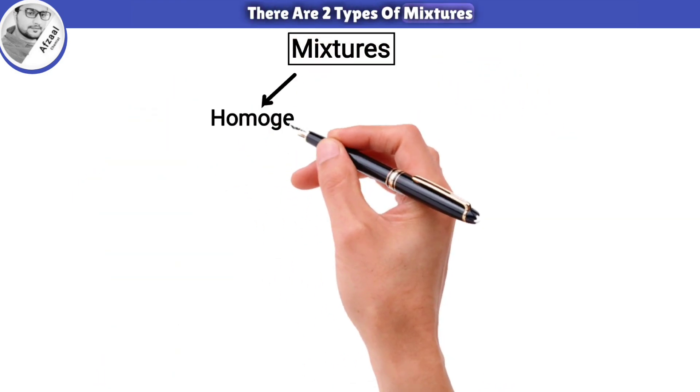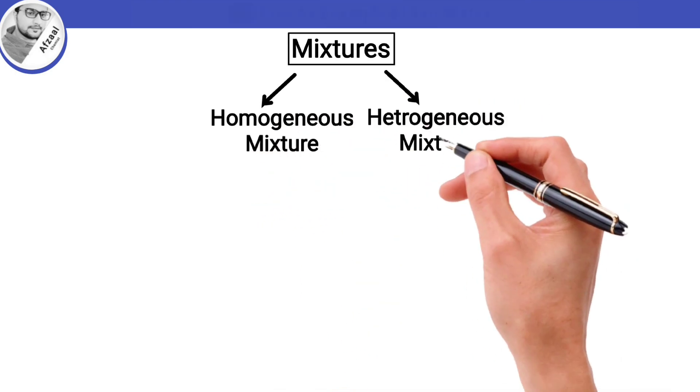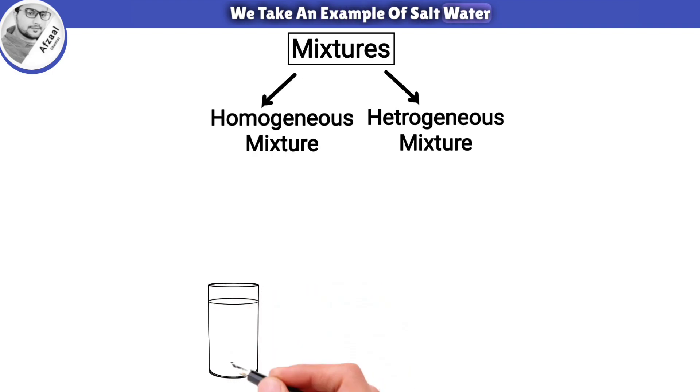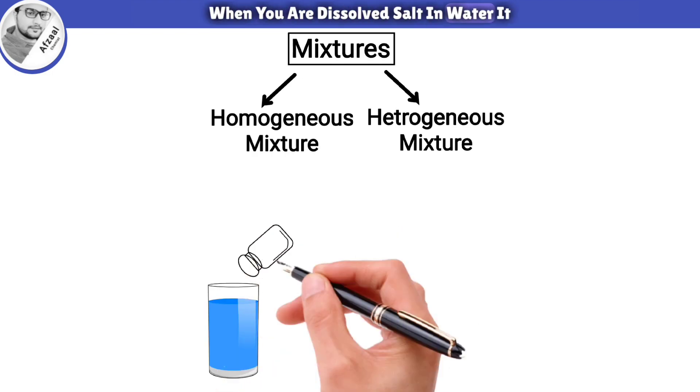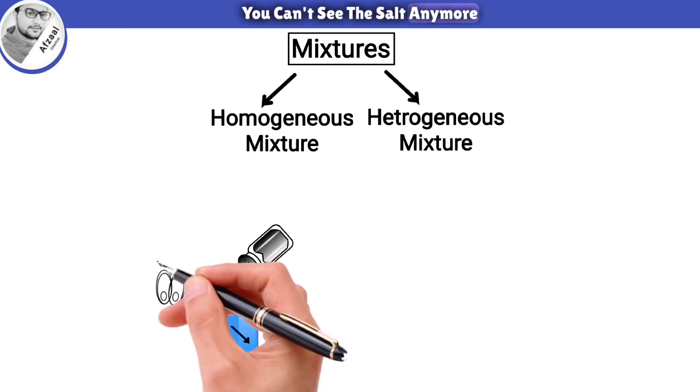There are two types of mixtures: homogeneous mixture and heterogeneous mixture. We take an example of salt water. When you dissolve salt in water, it creates a homogeneous mixture because the salt particles are evenly spread out. You can't see the salt anymore, but it's still there.